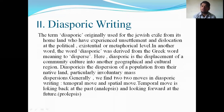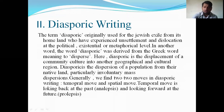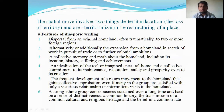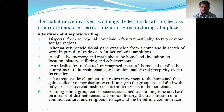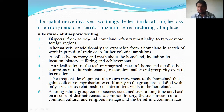Generally we find two moves in diasporic writing: one is a temporal move and another is a spatial move. The temporal move involves looking back at the past — also called 'nostalgia' — and looking forward, also called 'foresight.' These are the two temporal moves. The spatial move involves two things: one is de-territorialization, meaning the loss of territory, and the other is re-territorialization, meaning the restructuring of a place.